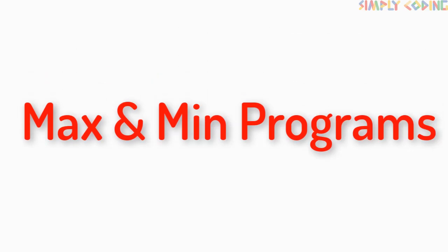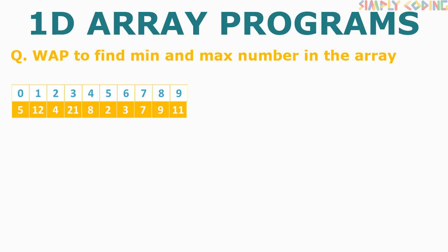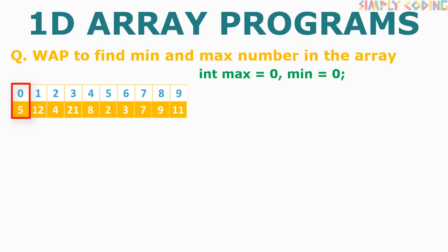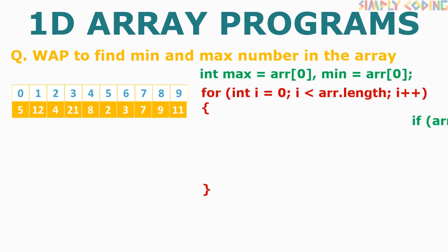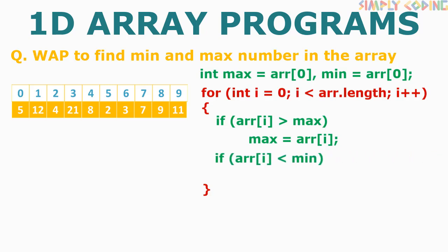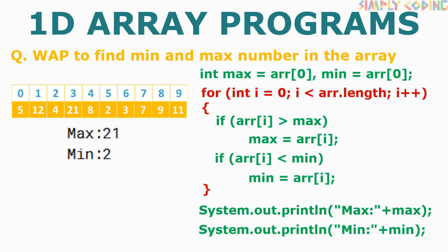For max and min programs, we need two variables to hold the max and min values. We do not initialize them to 0, as 0 could potentially be a min not in the array. Instead, initialize both to the first element of the array at index 0. Inside the loop, check if any array element is greater than max — if yes, make it the new max. Similarly check if any element is less than min — if yes, make it the new min. After checking all values, outside the loop print max and min.